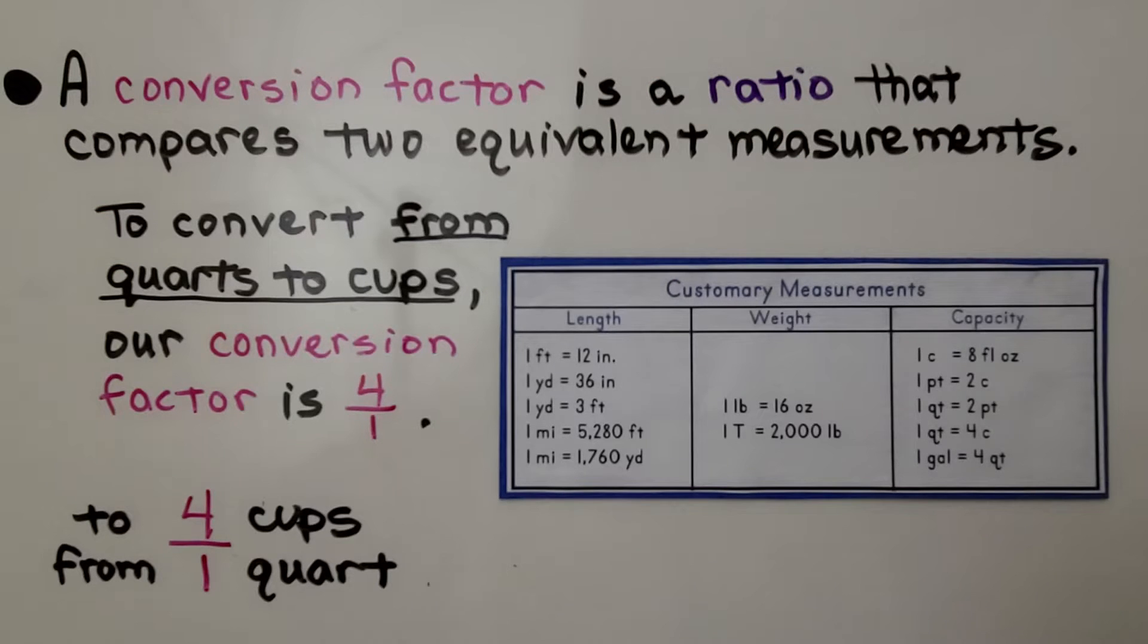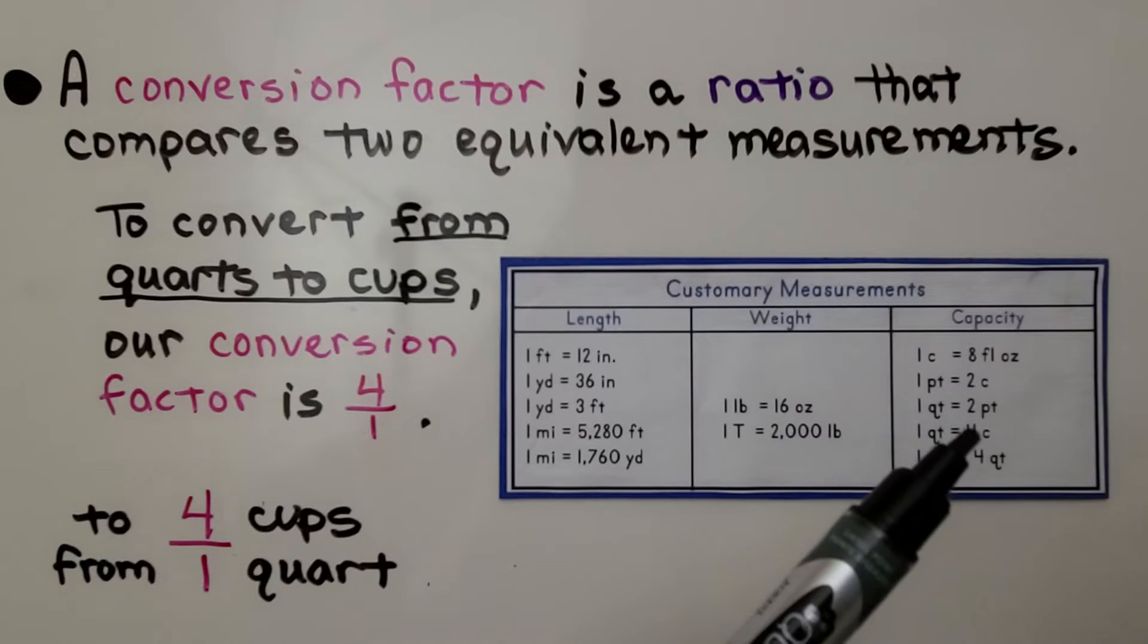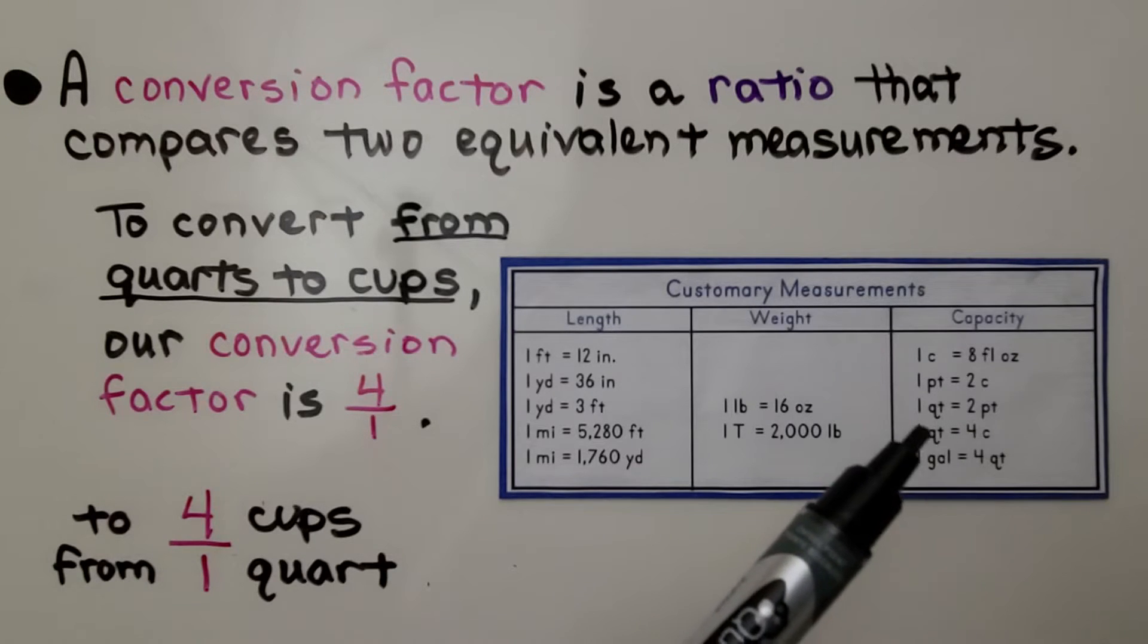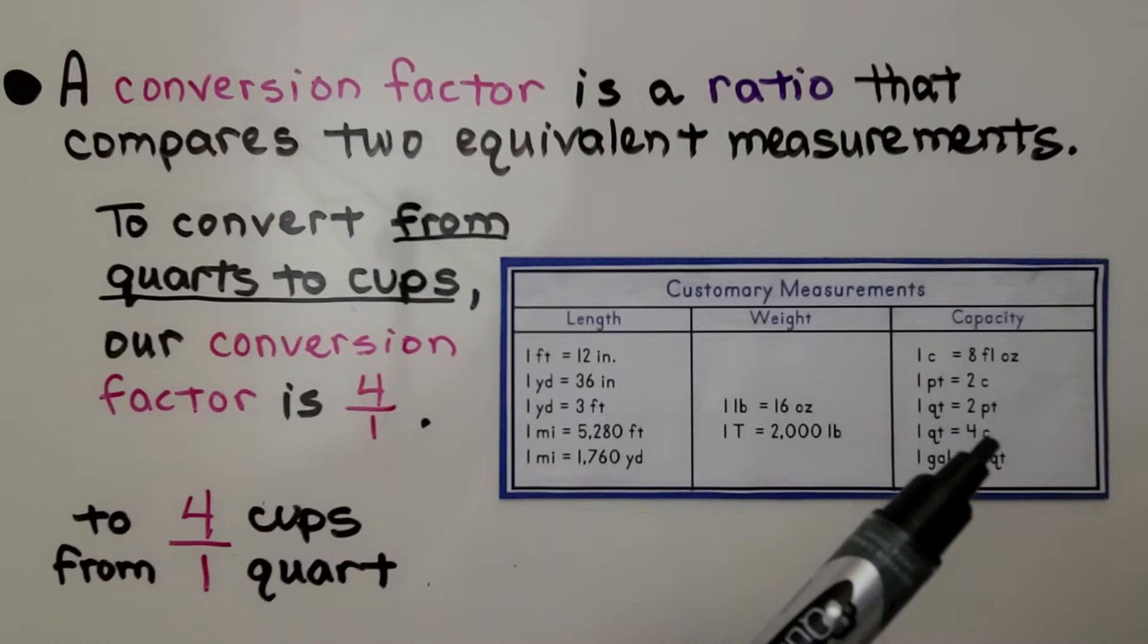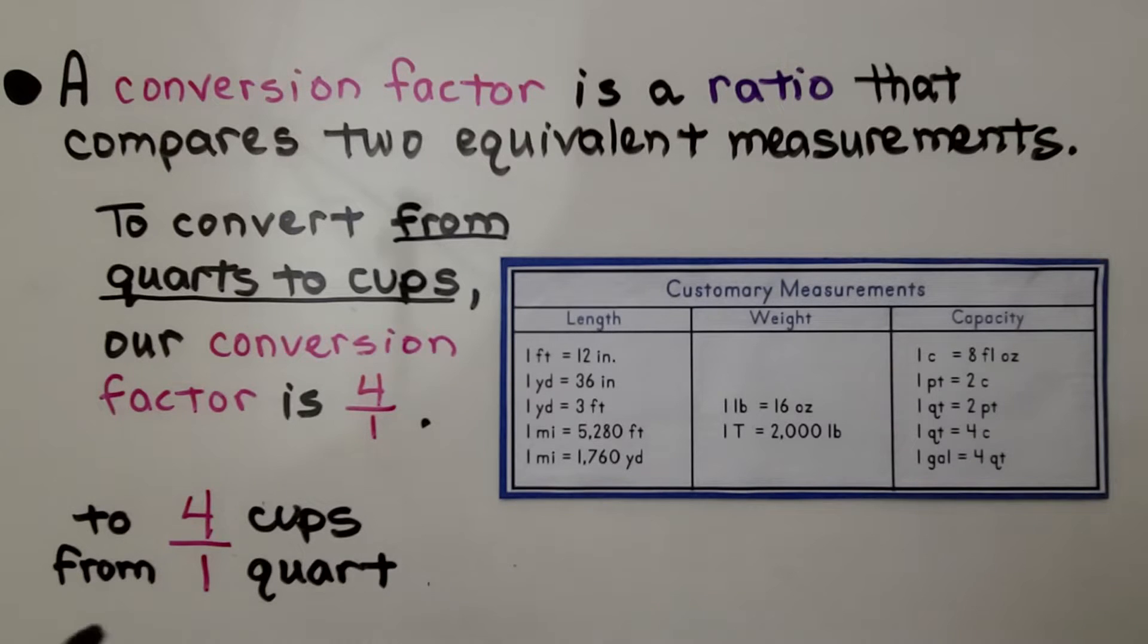A conversion factor is a ratio that compares two equivalent measurements. So to convert from quarts to cups, our conversion factor is 4 to 1. We have 4 cups in 1 quart. 1 quart is equal to 4 cups. We go from quarts to cups. See how the from is the denominator and the to is the numerator? We're going from quarts to cups. We have a conversion factor of 4 to 1.